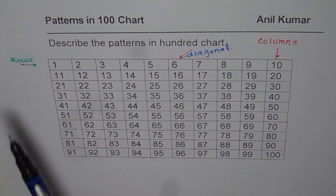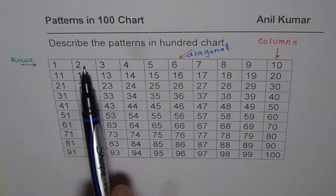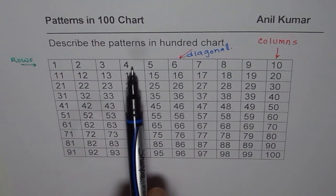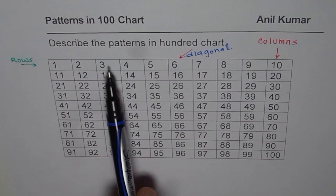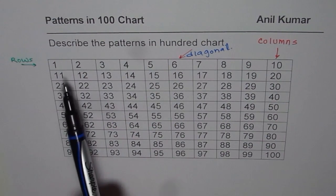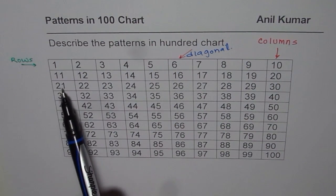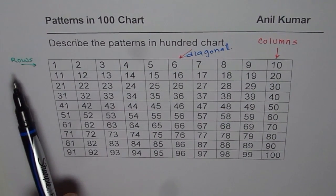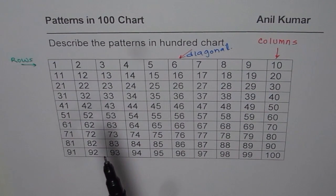Let's begin with rows. What do you notice? If you follow a row, every number is increasing by 1. For example: 1, 2, 3, 4... then 11, 12, 13, 14... then 21, 22, 23. So if you follow the rows, the numbers are increasing by 1.